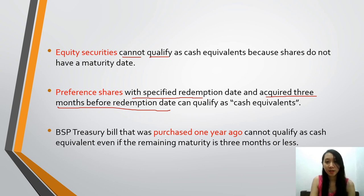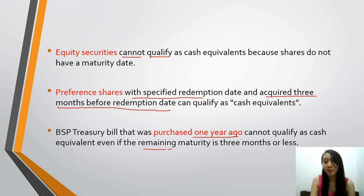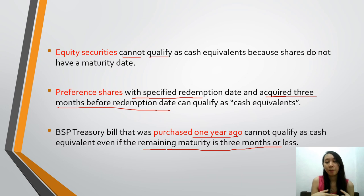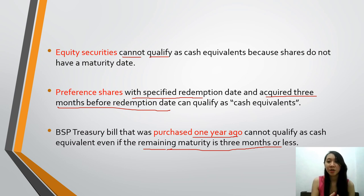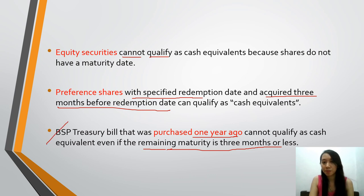Next: a BSP treasury bill that was purchased one year ago cannot qualify as cash equivalents, even if the remaining maturity is three months or less. So if it was bought one year ago, even if there are only three months or less remaining before it matures, that bill does not qualify as a cash equivalent. The rule is that you must have purchased it three months before the maturity date — buying it one year ago already breaks that rule.